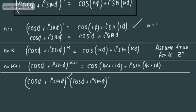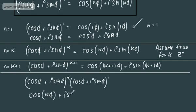So we've got cos θ plus i sin θ to the k, multiplied by cos θ plus i sin θ to the first power. We've already shown that cos θ plus i sin θ to the power of k is cos kθ plus i sin kθ, and to the first power it is just cos θ plus i sin θ. So I'm going to rewrite this using our assumption as: (cos kθ plus i sin kθ) multiplied by (cos θ plus i sin θ).